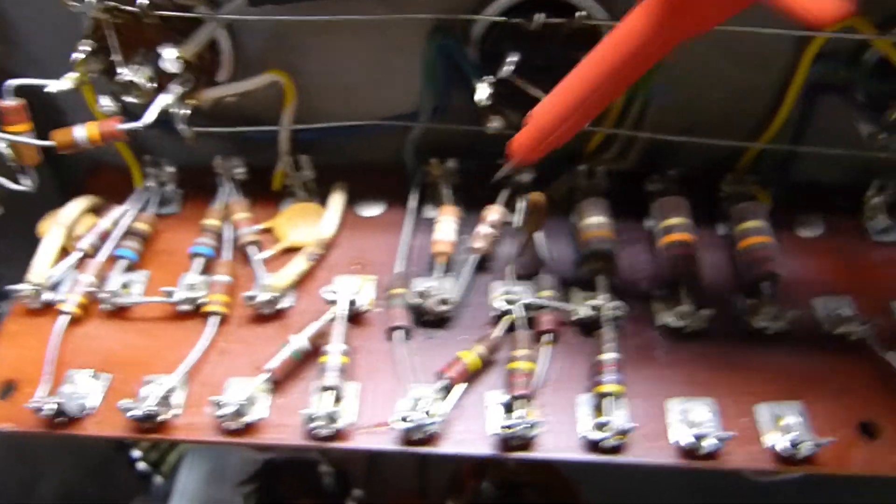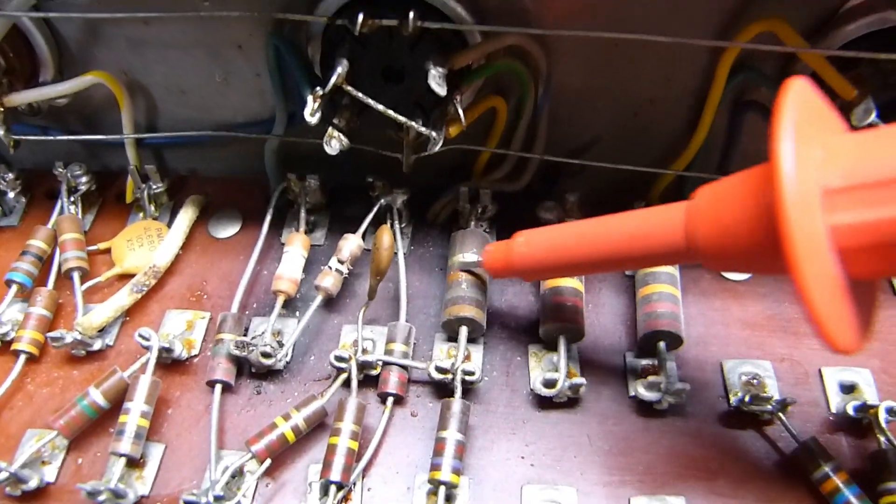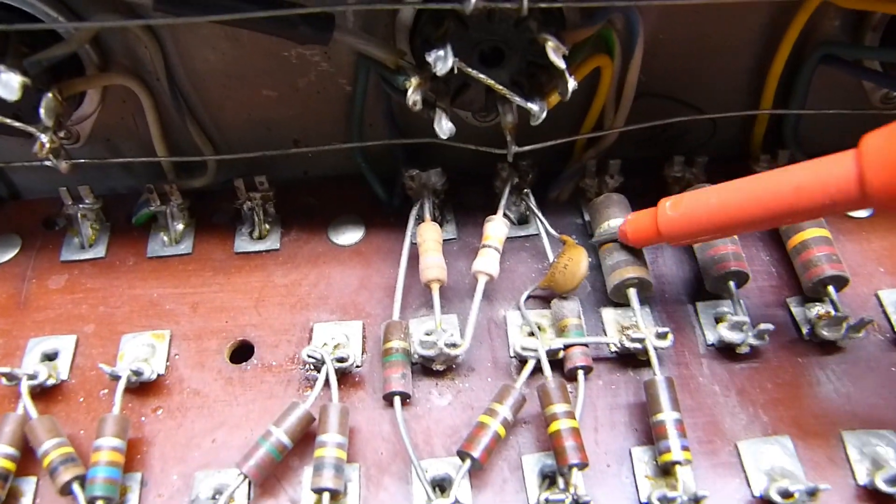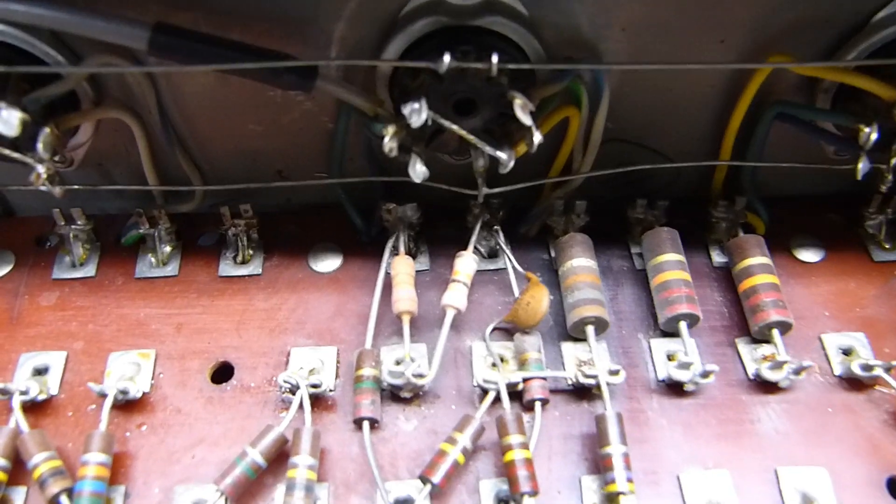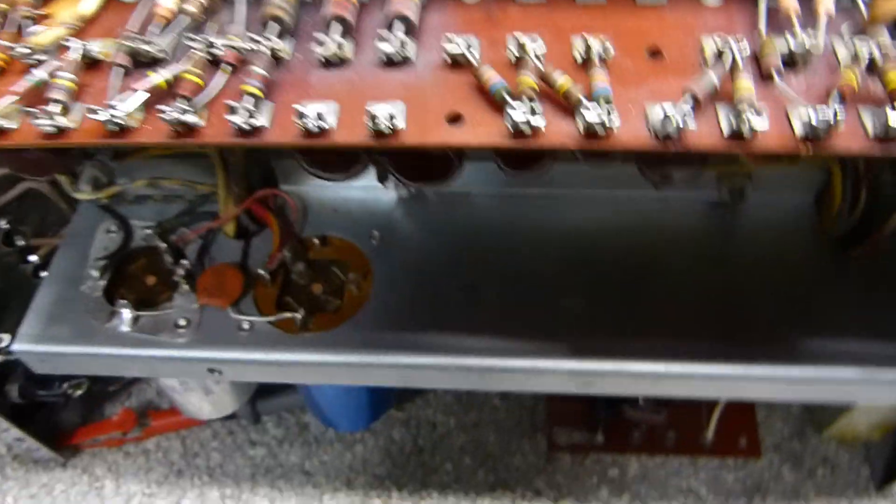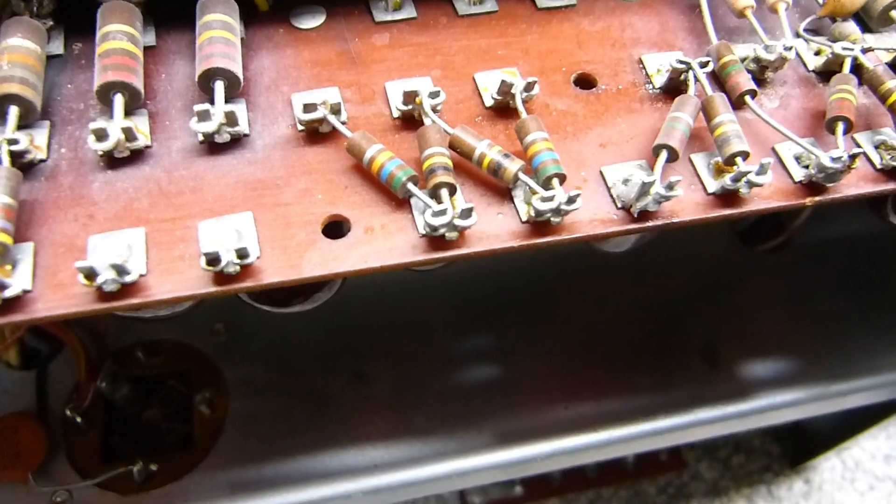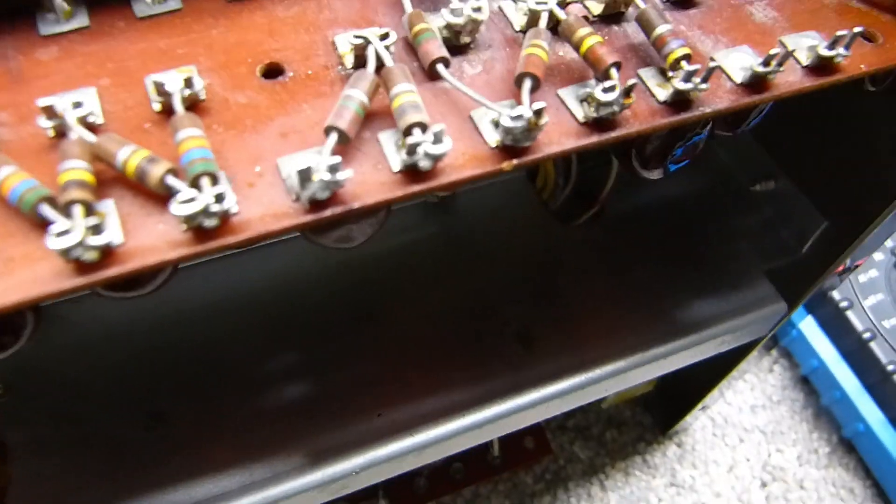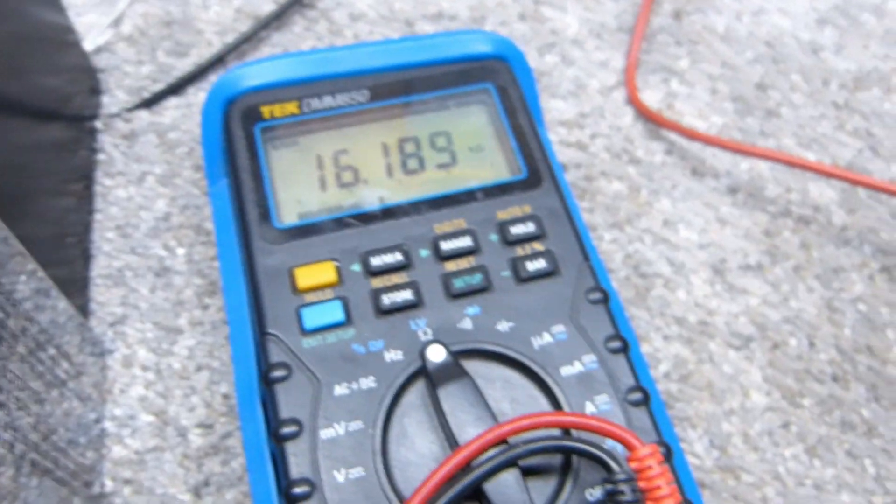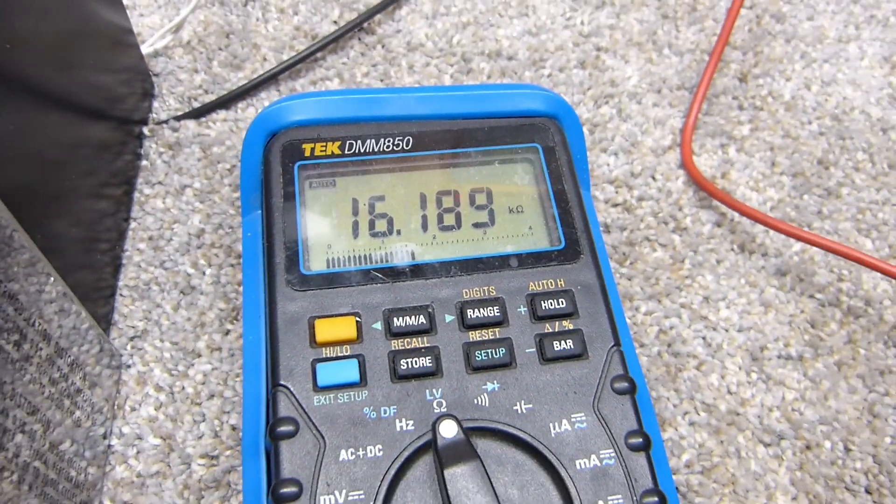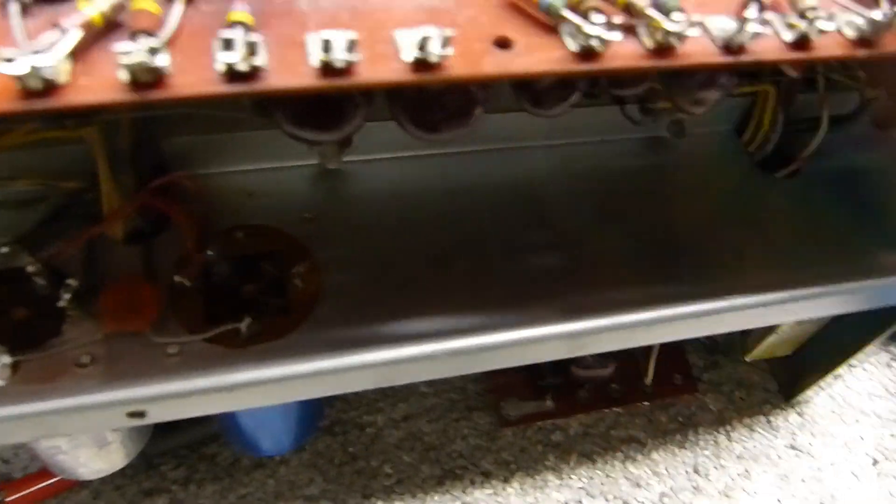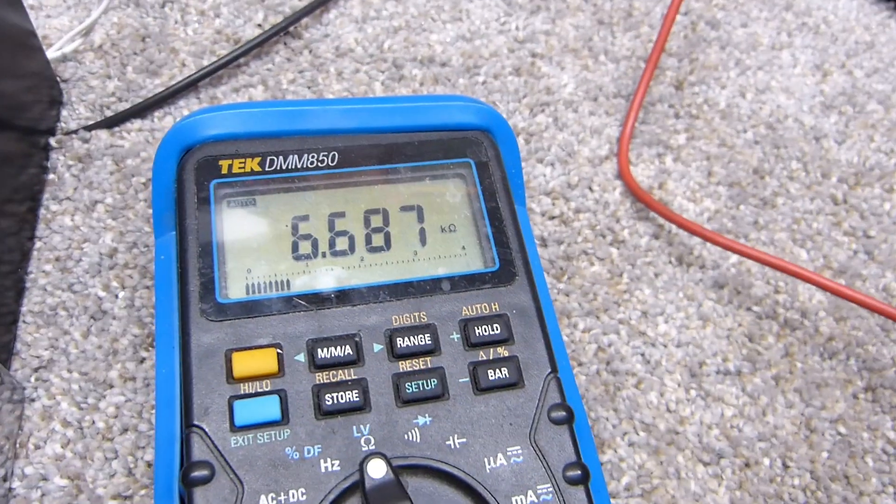And this 18k right here measures like 6k. This one measures okay. Let me show you. One side of it goes straight to ground so we can just hook one side to the chassis. I know I'm moving the camera around a lot, but I've got to do all I can here. Okay, that's the ground side. And this one measures 16k. That's not too bad.